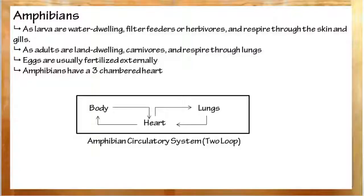Alright, to recap. There are two major phases in the amphibian life: as larvae and as an adult. Larvae are generally water-dwelling, filter feeders or herbivores, and they respire through either the gills or the skin.